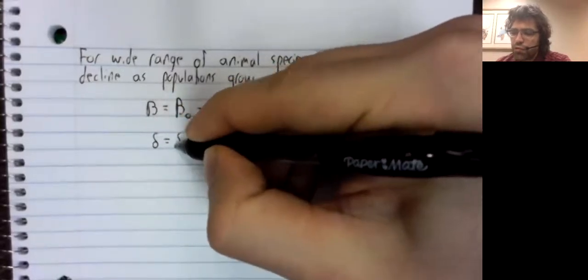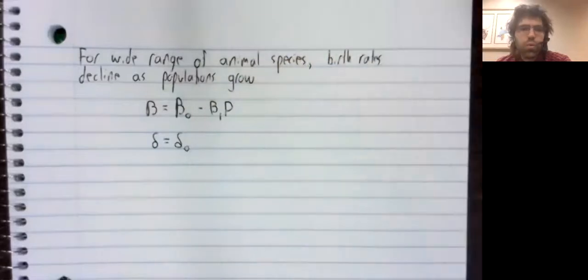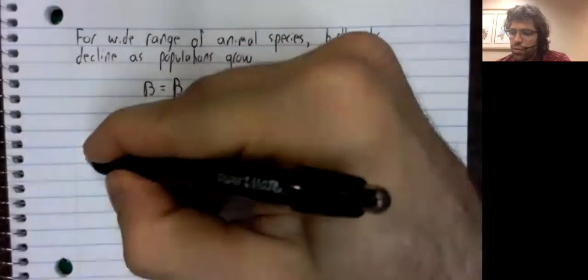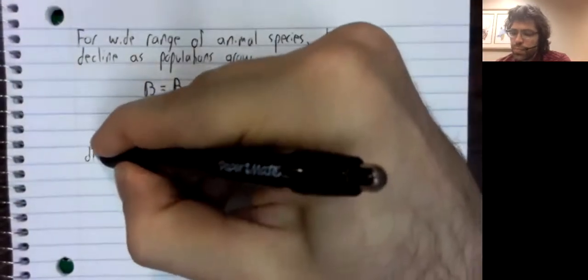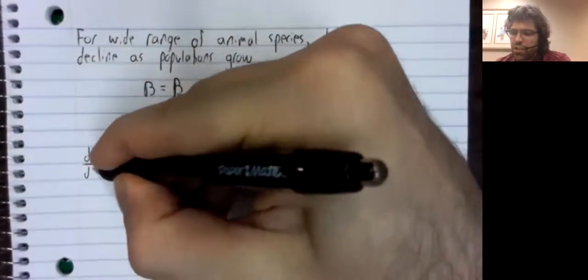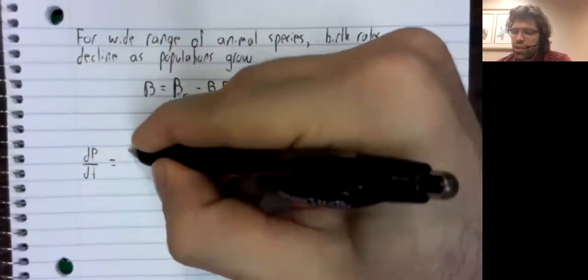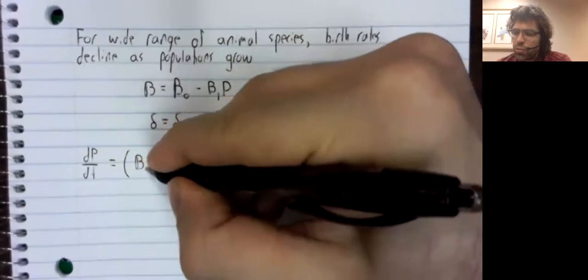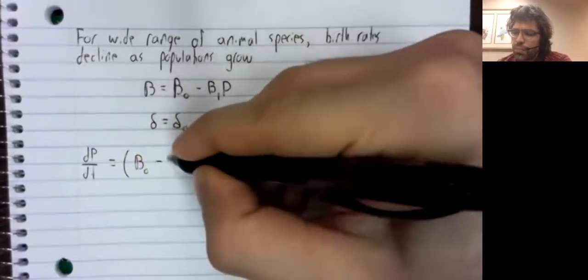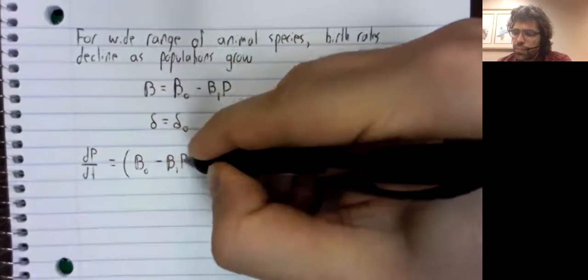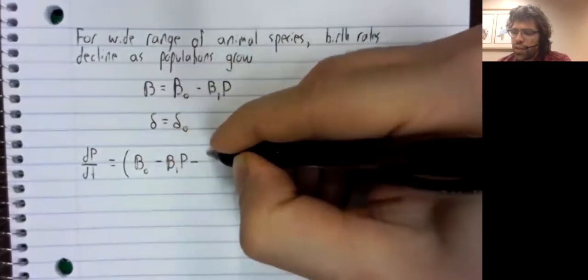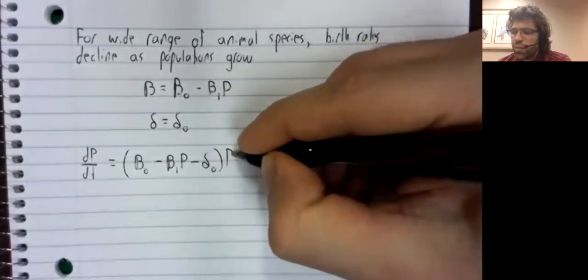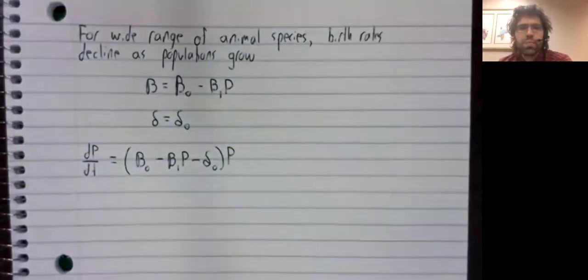Our death rate will be constant, delta sub-zero. And plugging these into the general population model, it's our birth rate minus our death rate times the population.